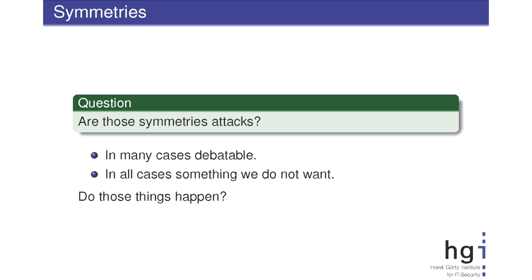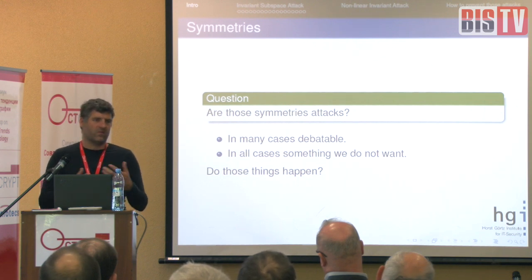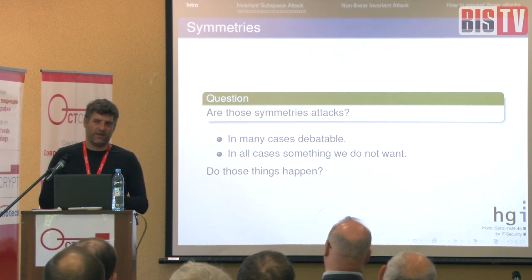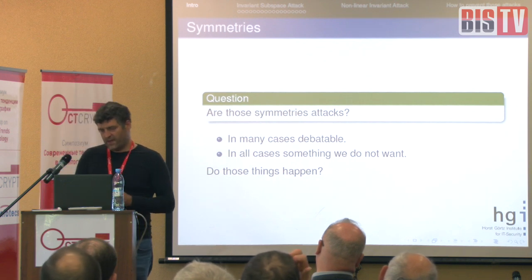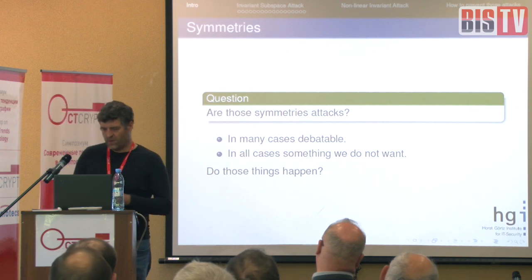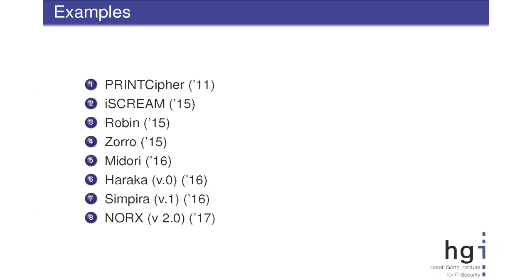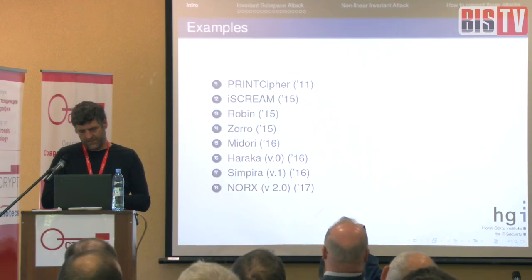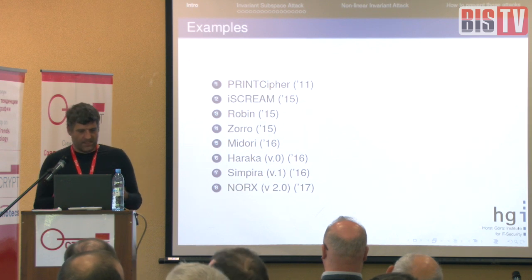You can ask if these symmetries are actually a threat, and this depends. In many cases, if the number of weak keys is very small, it's probably not critical. Just pick 10 random keys and look at the plaintext and ciphertext and you'll find some symmetry. But in all cases this is certainly something we do not want—we'd like to avoid this. And do these things happen? Here are examples of ciphers broken with these kinds of symmetries: starting with PRINT cipher, and then many others followed.